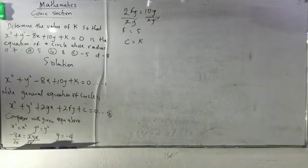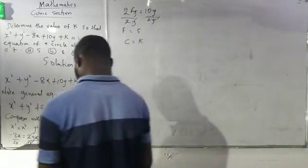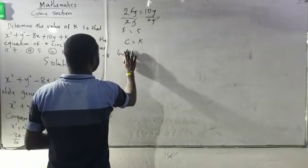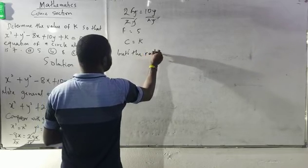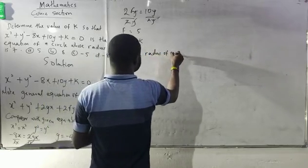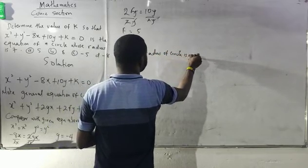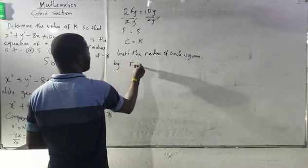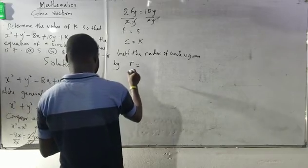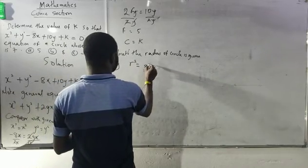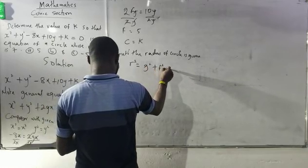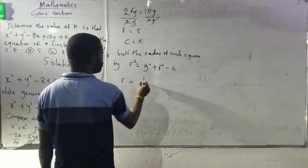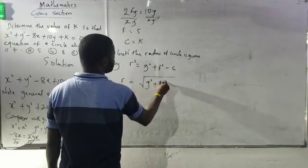For my c to be equals to k, what I will just need to do is that the radius of circle is given by r equals to the square root of g² + f² - c.